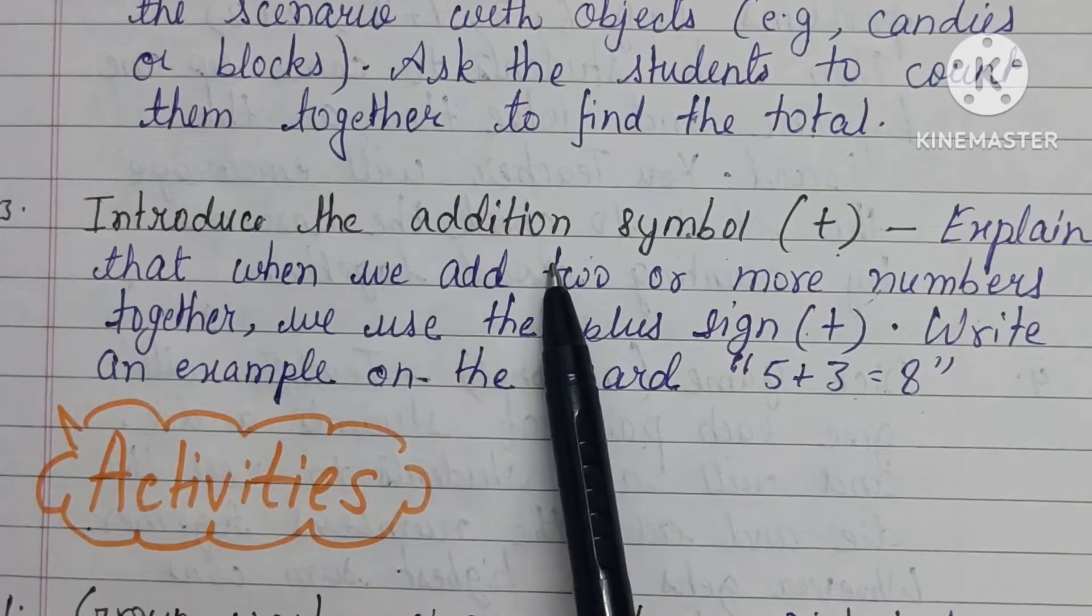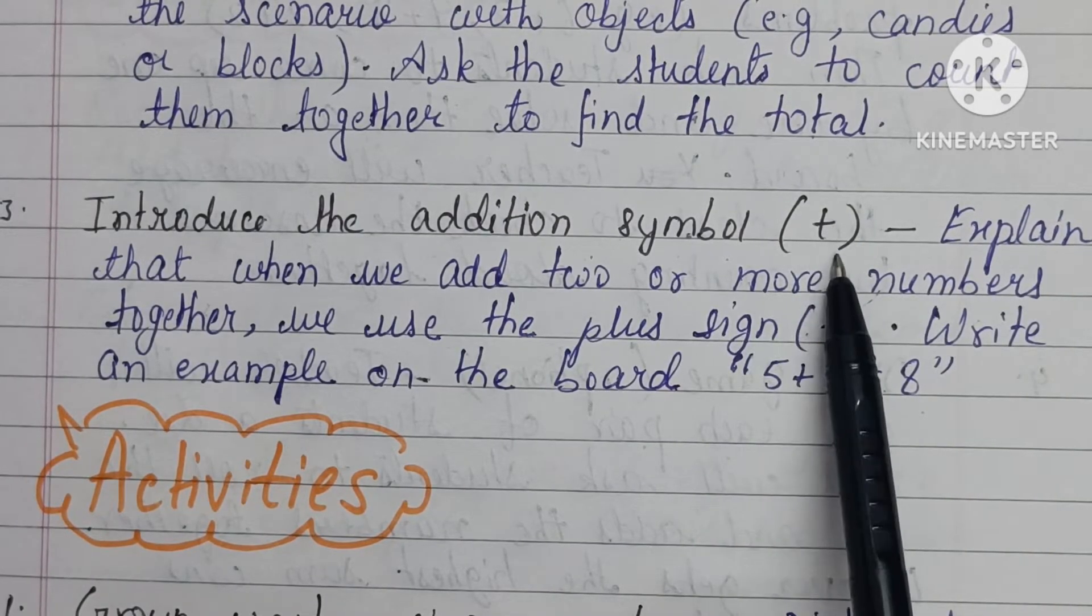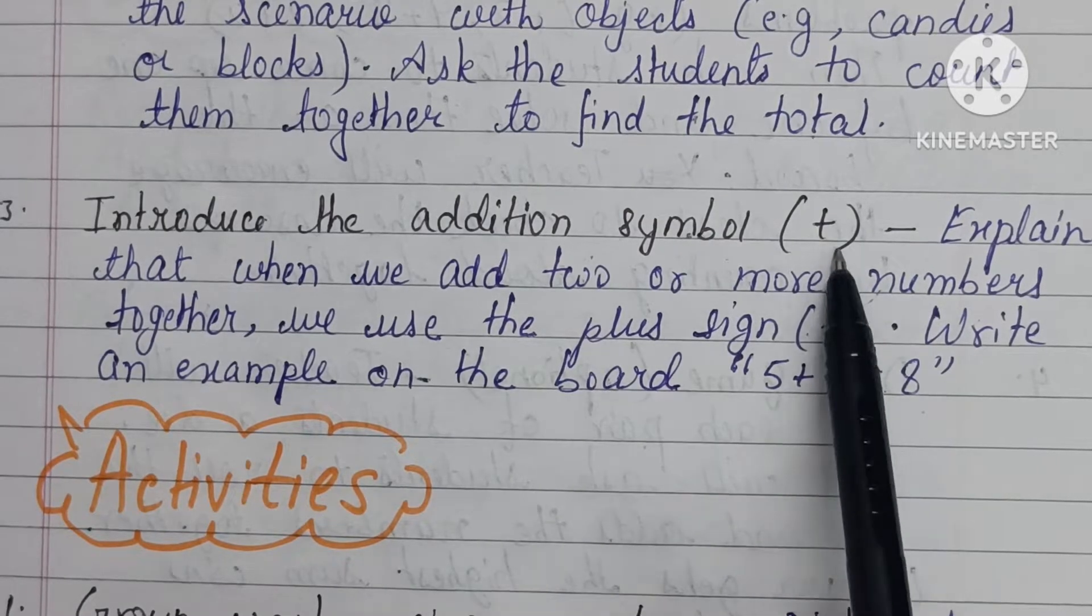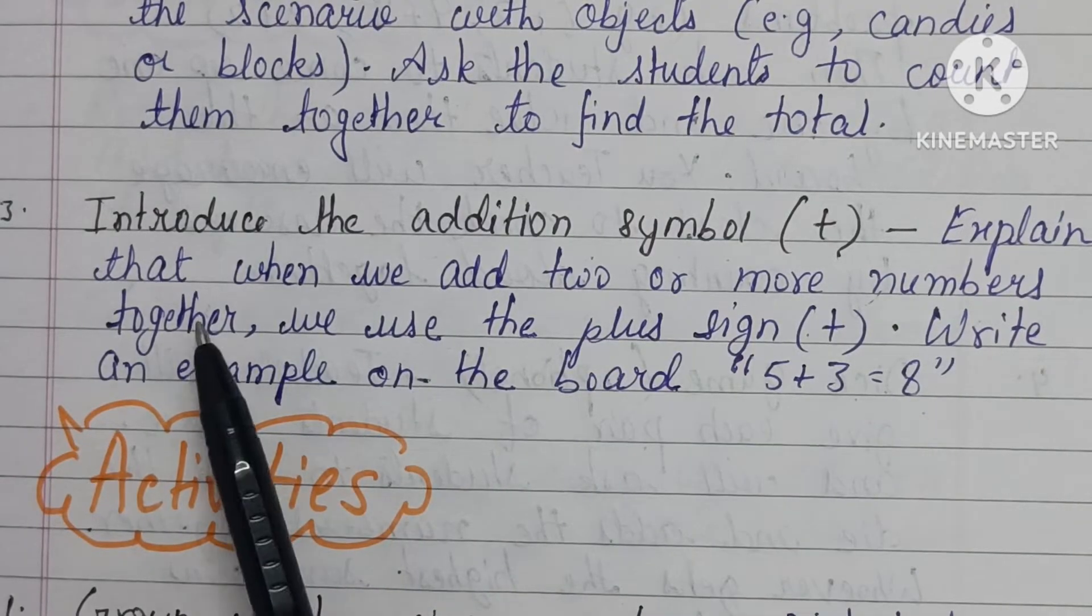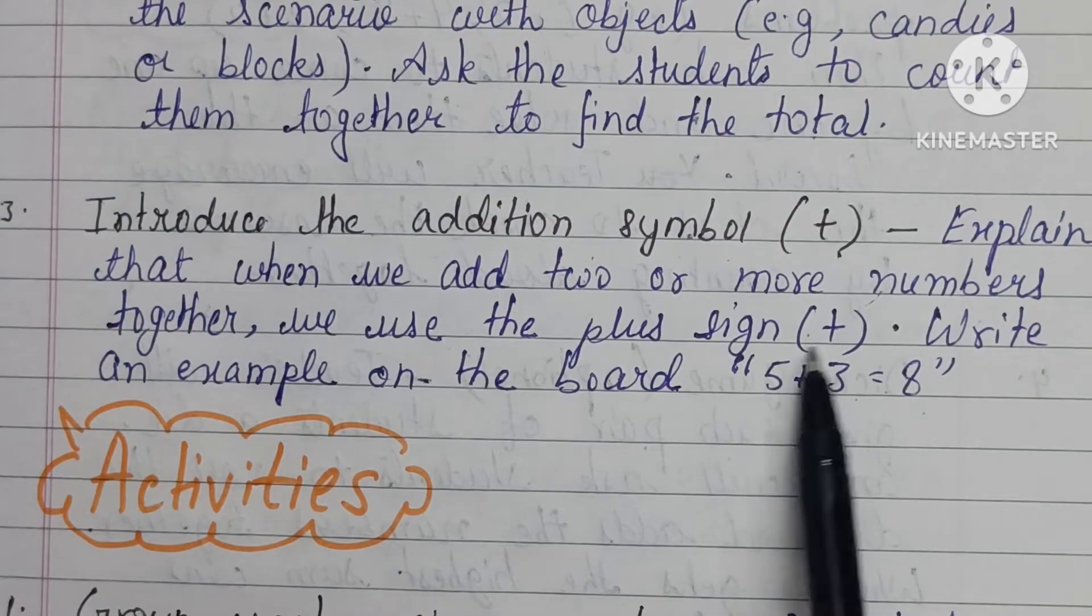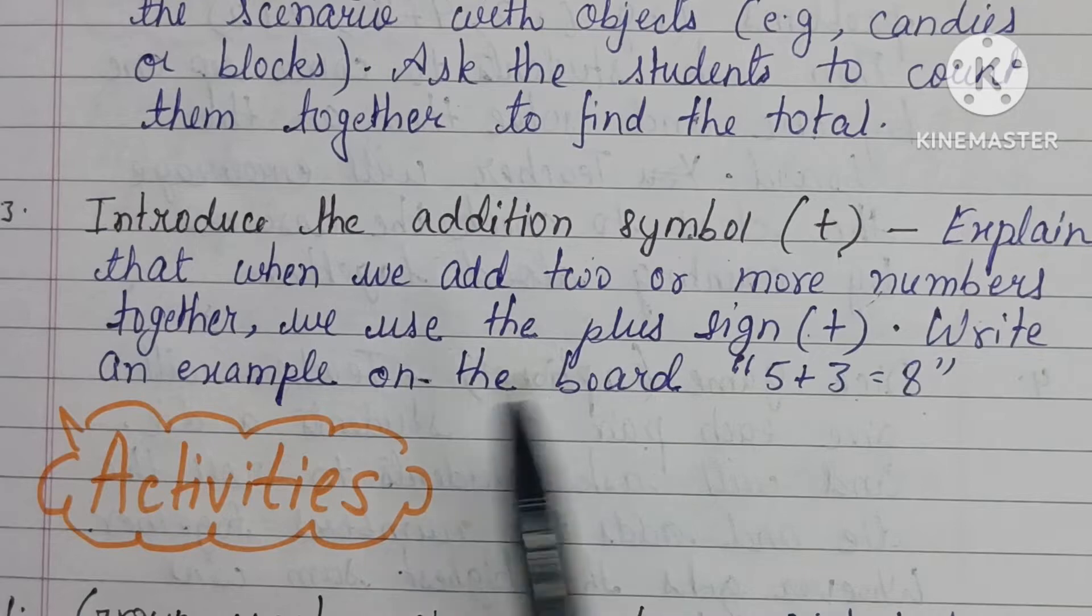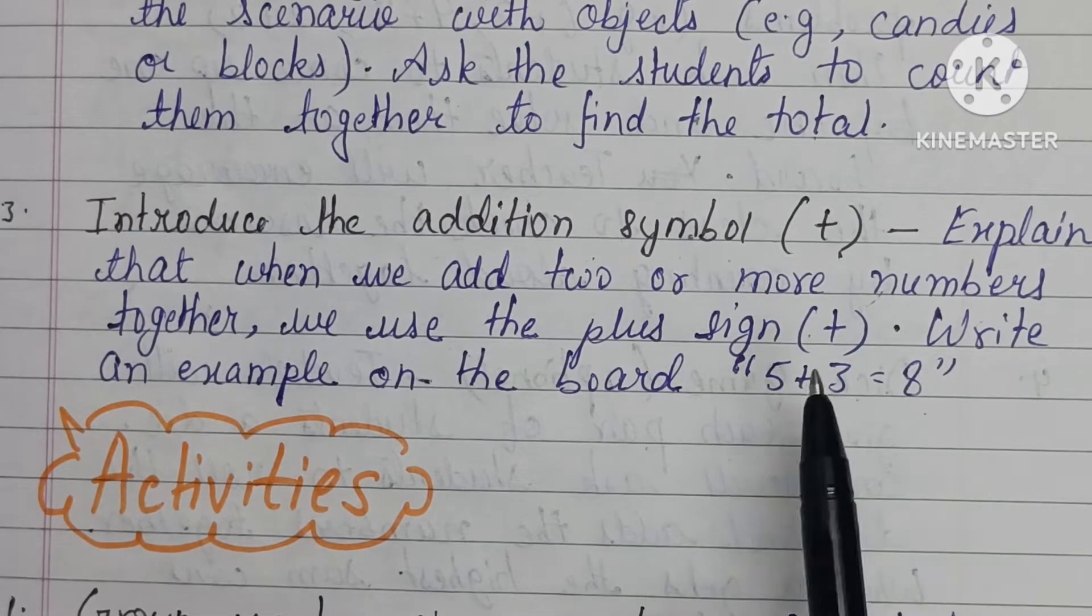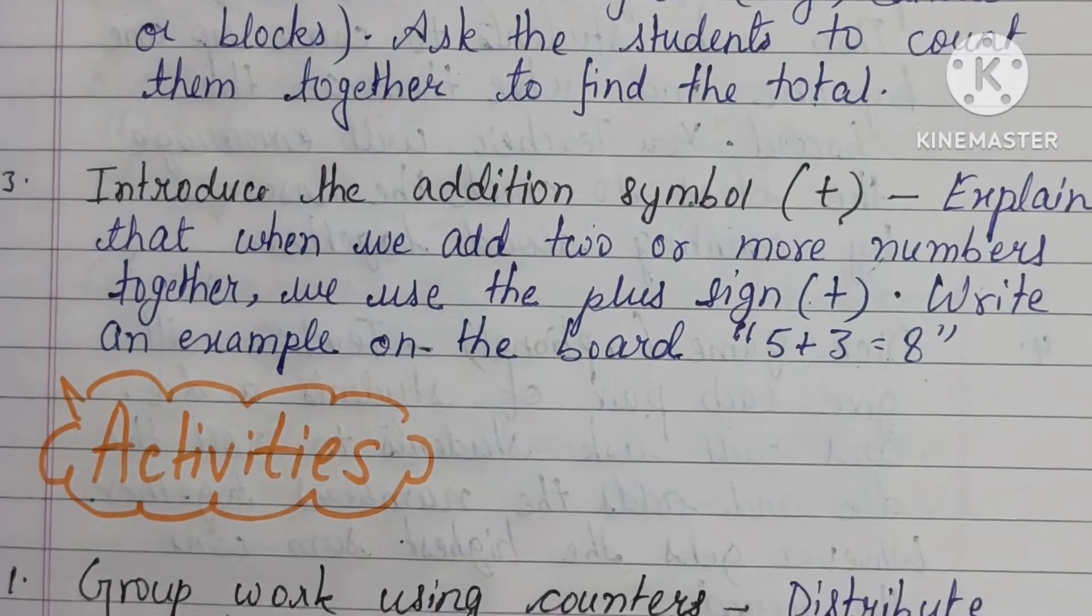Next, introduce the addition symbol. This is the plus sign. You have to introduce the symbol of addition. Explain that when we add two or more numbers together, we use the plus sign. This is the sign. You can also write an example on the board: five plus three equals eight. Show this plus sign to the students.